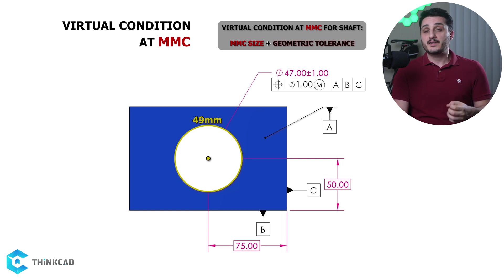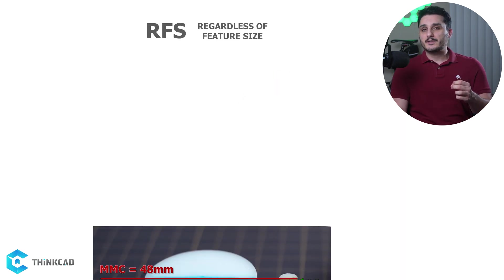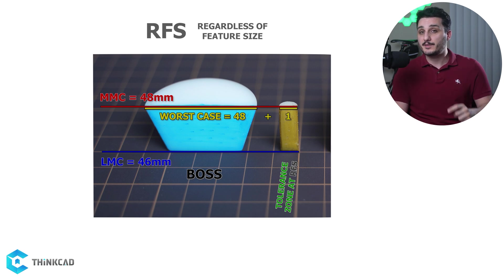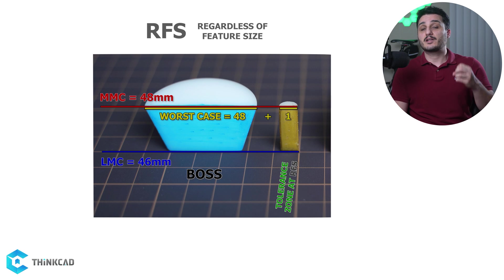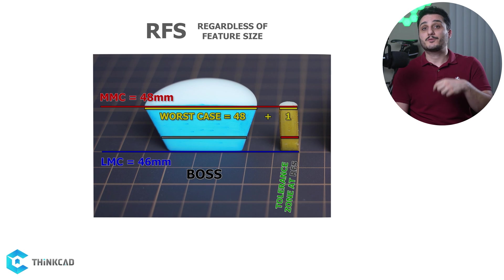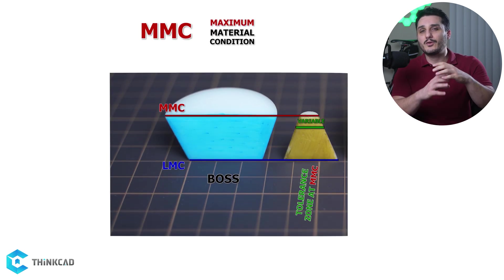MMC modifier is extremely useful when we deal with assemblies — it doesn't let any tolerance go to waste. With RFS, or regardless of feature size, our worst case is still 49 millimeters because our worst size of 48mm combined with the constant 1mm of position tolerance still gives us 49mm. But with RFS, as our size gets smaller, we still have the same 1mm of position tolerance, which means there will be many cases where we could have had a fit but had to throw the part away in inspection. MMC basically allows you to use all the room for error, which in reality is dependent on the size of our feature.